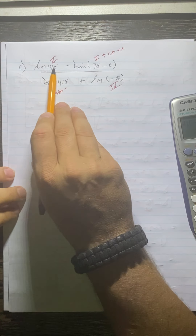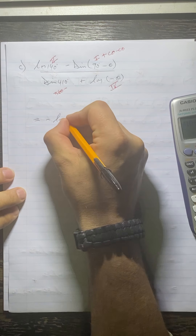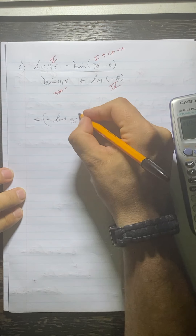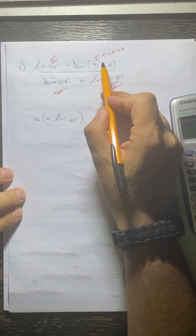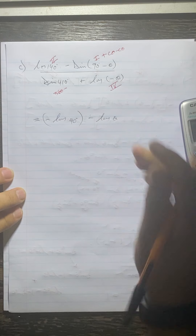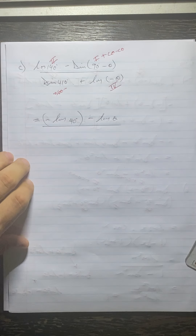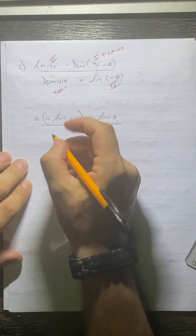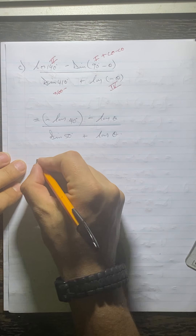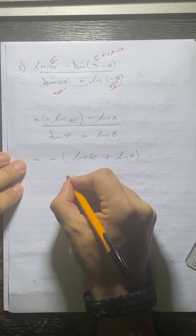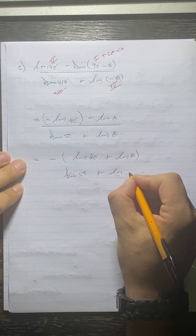Cos in the second is negative. To reduce an angle in the second, it's 180 minus the angle, so 180 minus 140 gives us 40 degrees. Then sine in the first is positive but it changes to cos because of co-function, so this is minus cos theta over. Remember that 410 is now going to change to 50, so we get sine 50. Then cos in the fourth is positive, so this will just be plus cos theta.